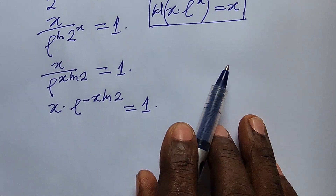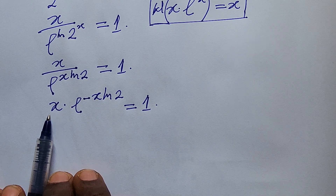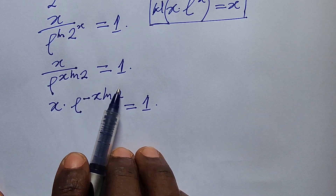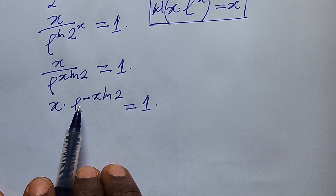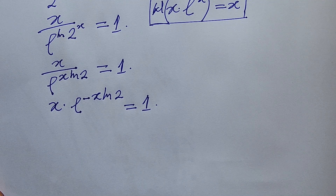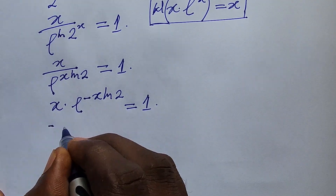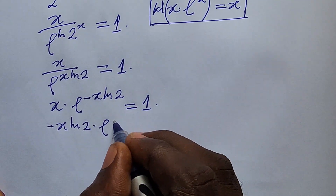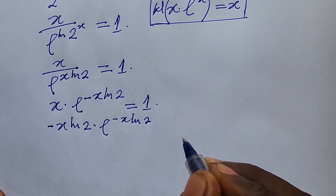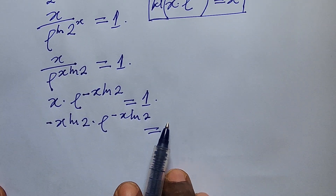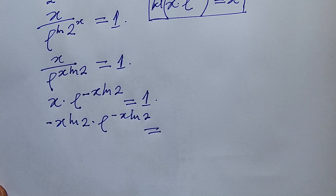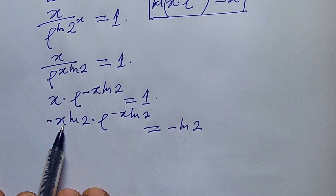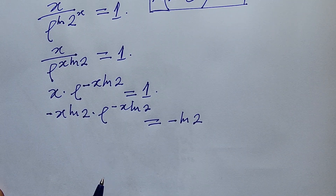At the base we already have x, but we don't have minus ln(2) yet. To make what we have at the base the same as in the exponent, we multiply both sides by minus ln(2). This gives us minus x·ln(2) times e to the power of minus x·ln(2) equal to minus ln(2).